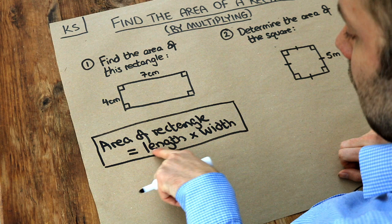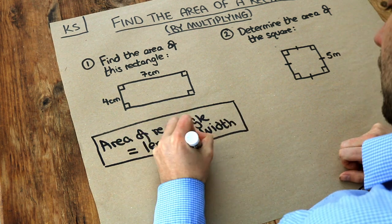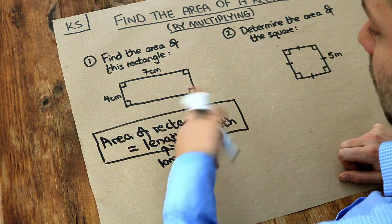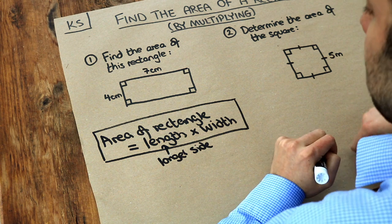And remember by the way that the length is the longer side of the rectangle and the width is the shorter side. But to be honest it doesn't matter which way you multiply these numbers around. Like 2 times 4 is the same as 4 times 2 for example.